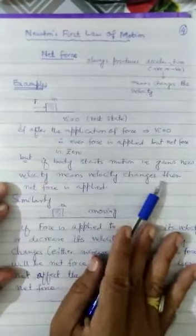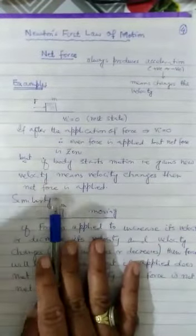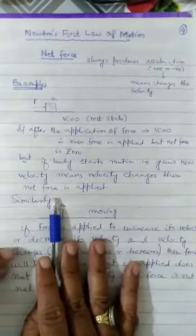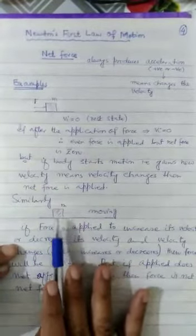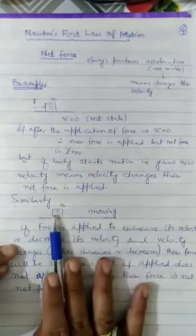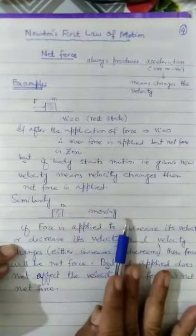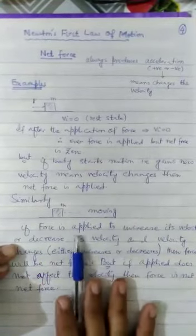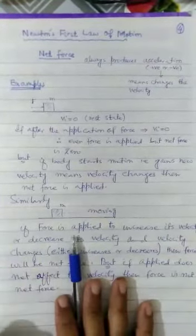But if body starts motion - let's suppose if you have applied force and body starts motion - means it gains new velocity. Initial velocity was zero. After the application of some particular force, if the body moves, it changes its velocity. It means now you can say this time net force is applied.